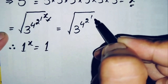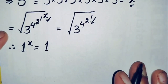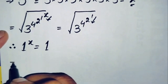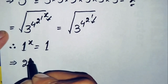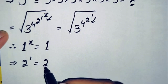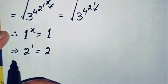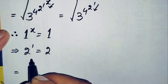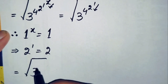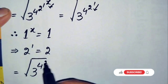Replacing 1 raised to power x with 1, the expression simplifies further. Next, we find the value of 2 raised to power 1. The value of 2 raised to power 1 is simply 2, because we multiply 2 exactly once. So we replace 2 raised to power 1 with 2.